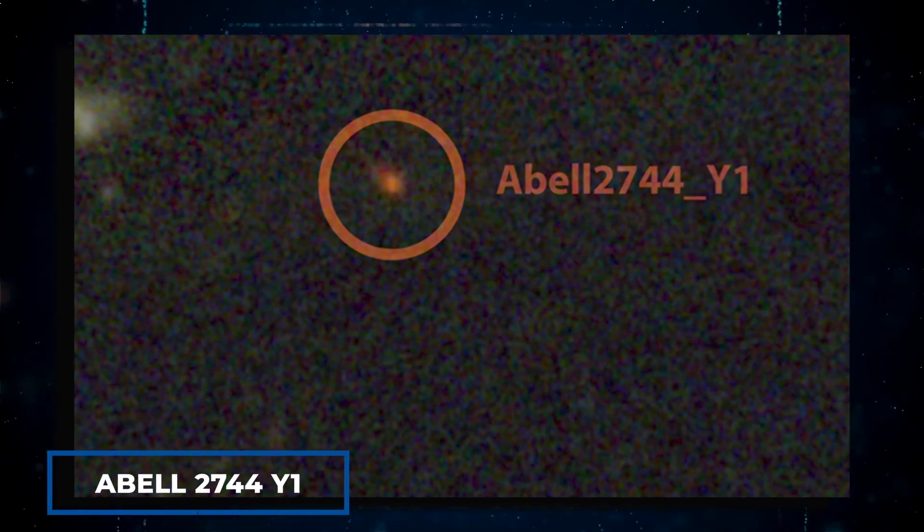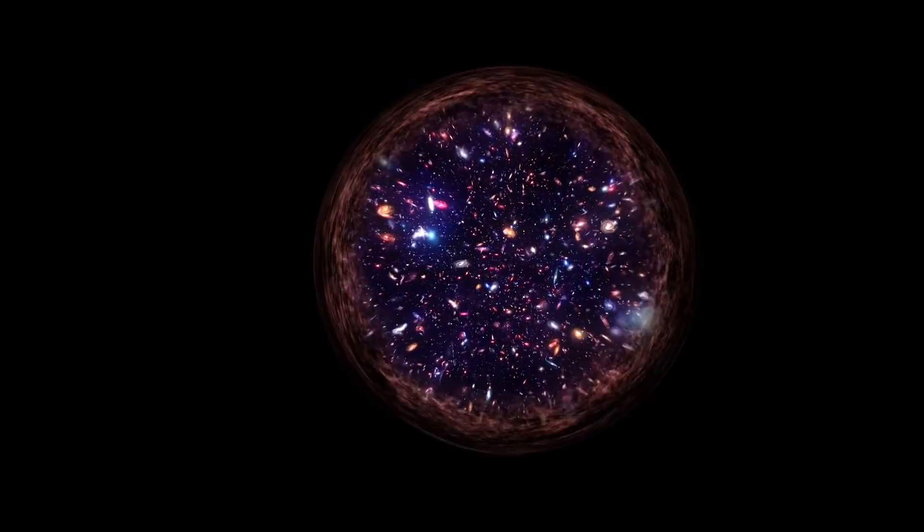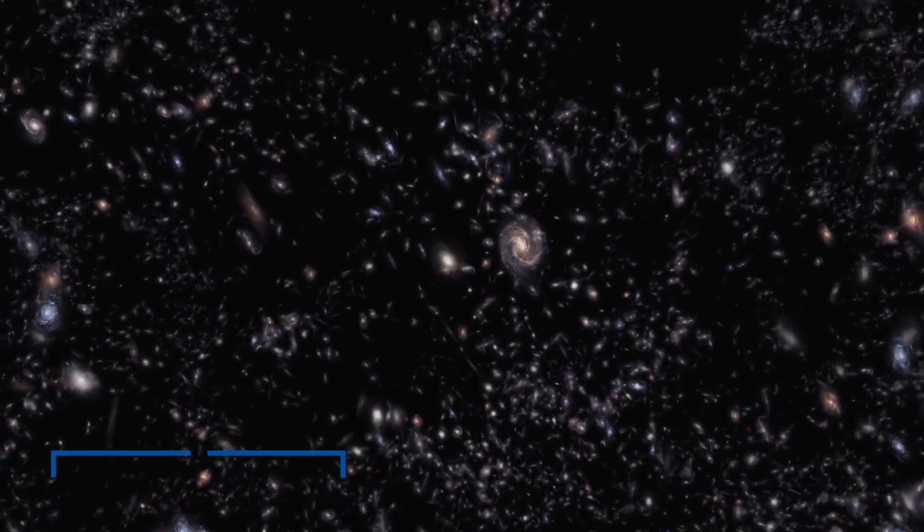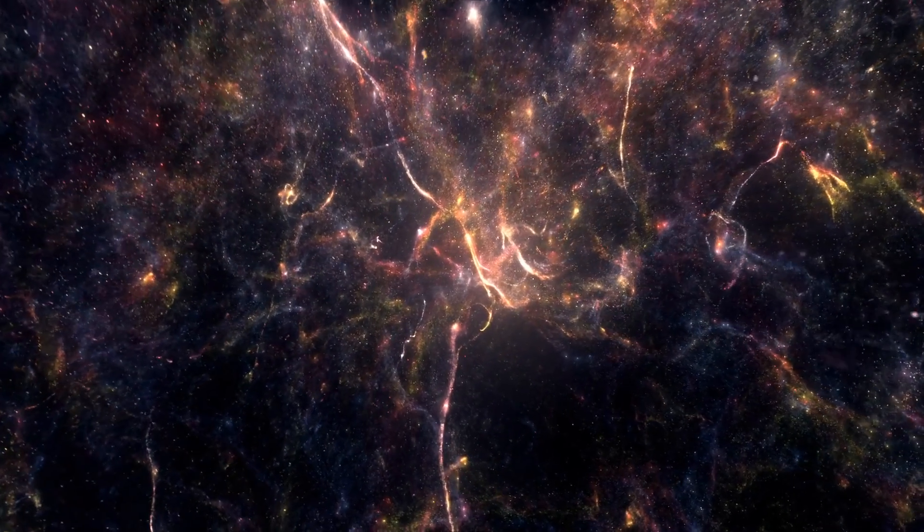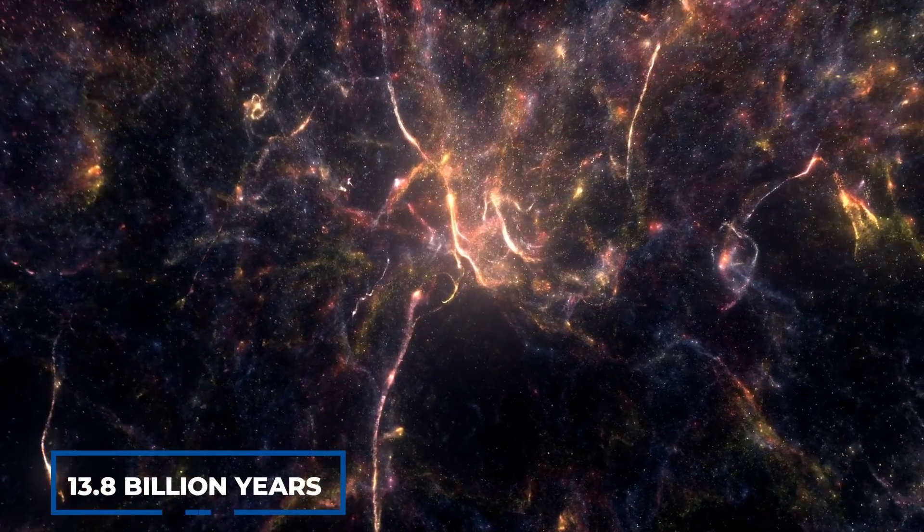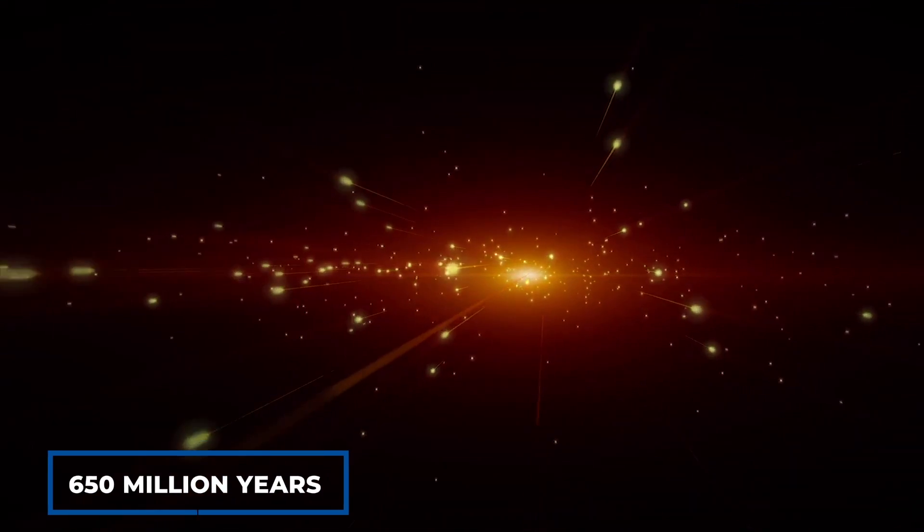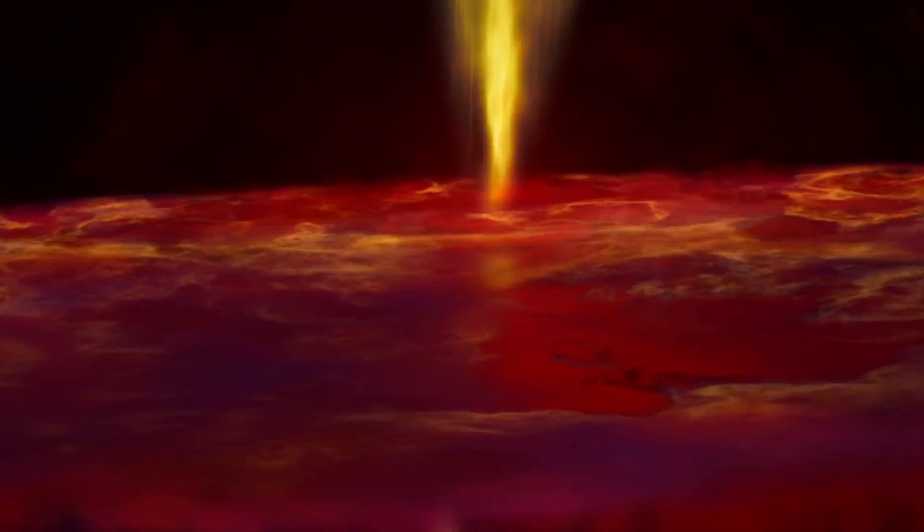Now, at the very edge of the universe lies a galaxy that got scientists buzzing with excitement. It's called ABEL 2744Y1. This extraordinary galaxy is remarkable for a multitude of reasons, one being that it is so far away from us that the light from it takes a staggering 13 billion years to reach us. That's almost as old as the universe itself, estimated to be 13.8 billion years old. What's more, we're seeing ABEL 2744Y1 as it was when it was only 650 million years old. But don't be fooled by its youth. This galaxy is a force to be reckoned with.